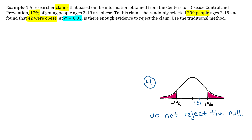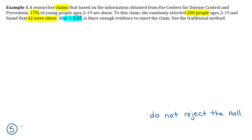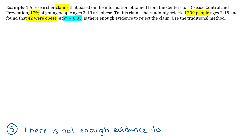Step five: make your conclusion statement. The claim was in the null hypothesis, and we did not reject the null, so therefore there is not enough evidence to reject the claim. Make sure you write that full sentence out — just saying 'there's not enough evidence' or 'not enough evidence to reject' is incomplete. Write the whole thing. It's nine words — I'm confident you can do that.